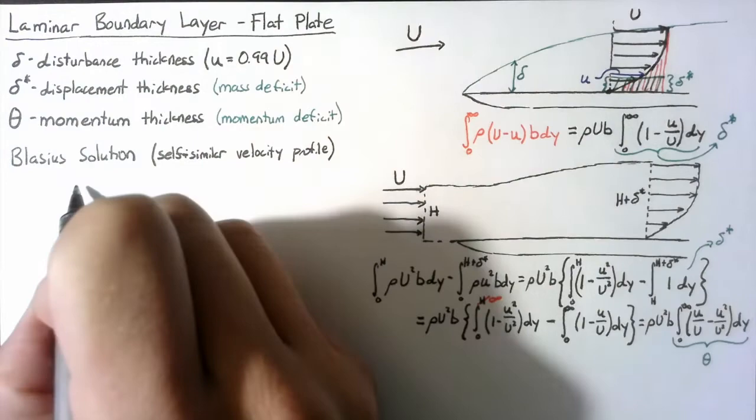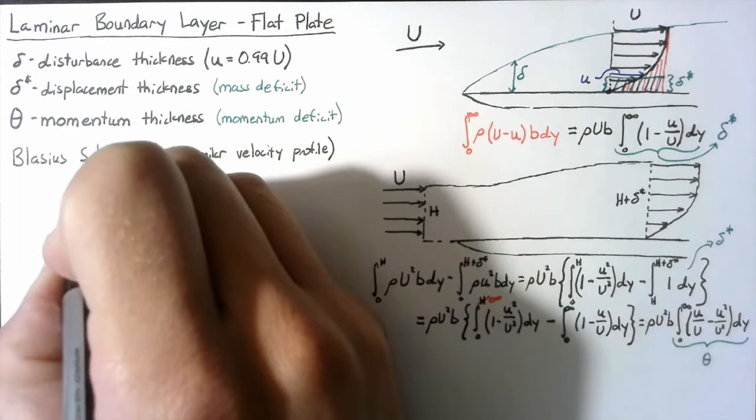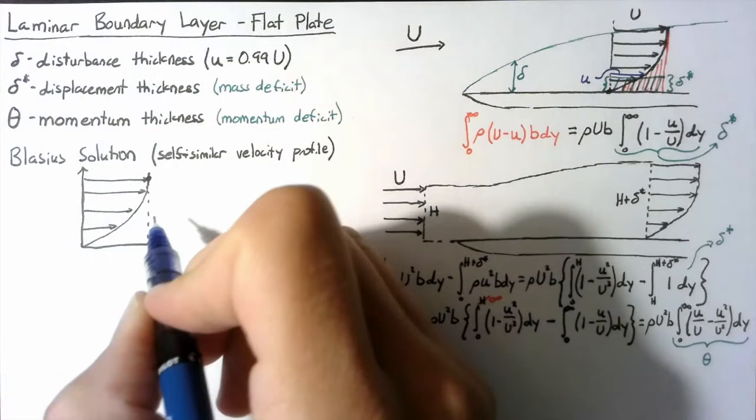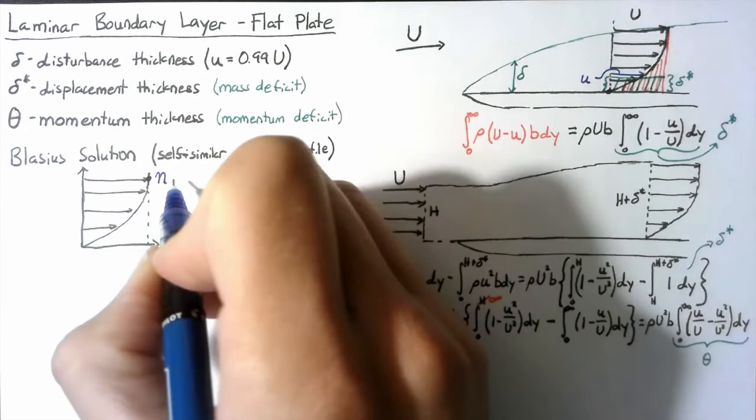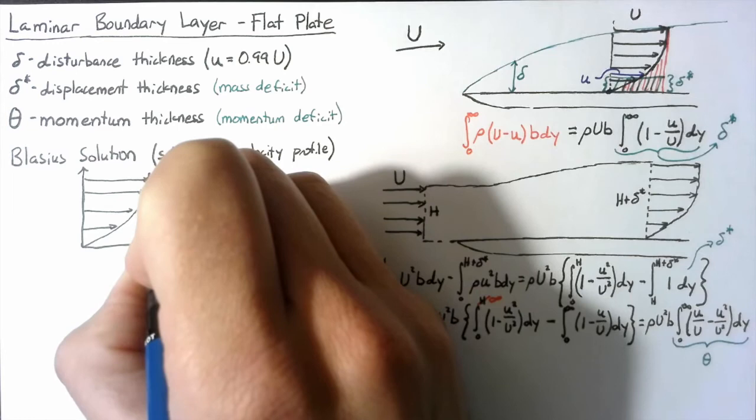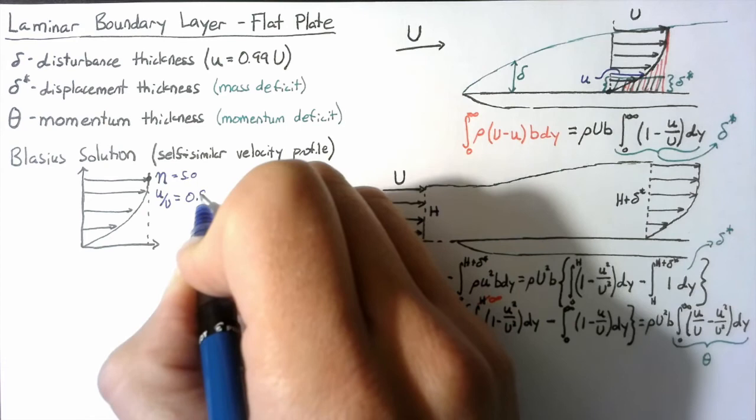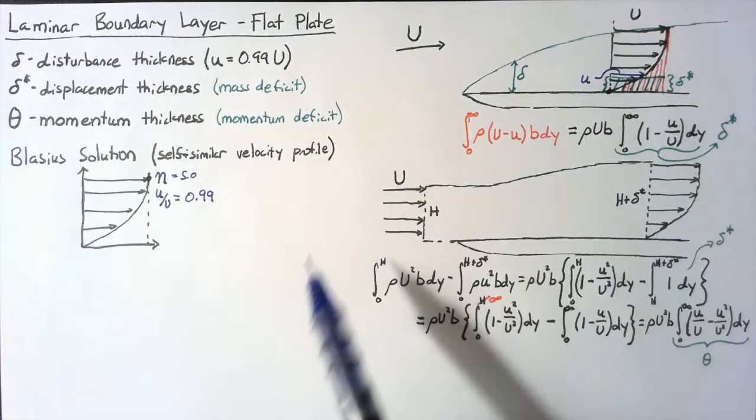Self-similarity just means that these things look the same — they've just been scaled appropriately. Our solution ends up looking something like this, basically what we've been drawing, but we can give it a little more detail. We usually define it up to the point where the height in non-dimensional terms, eta, is equal to 5.0.